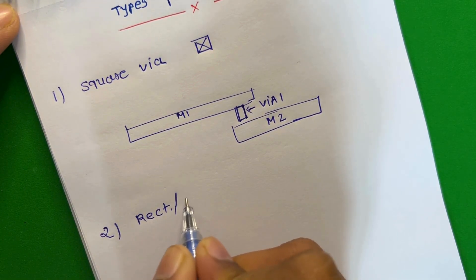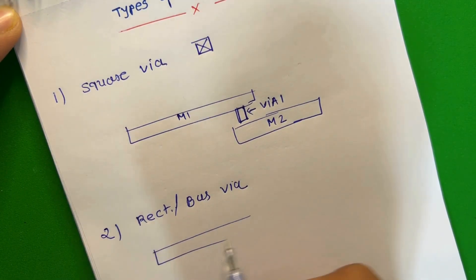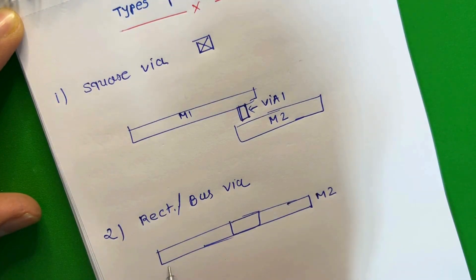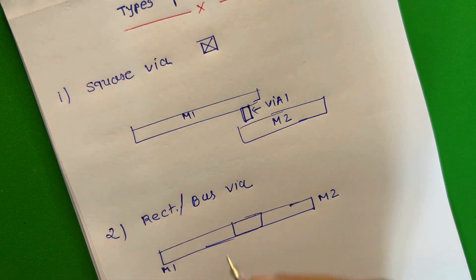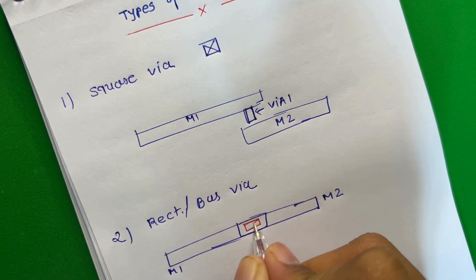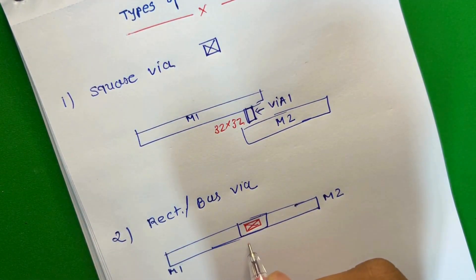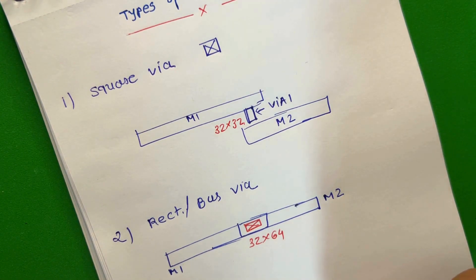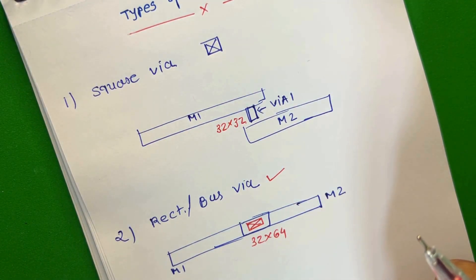The second type is rectangular wire, or bar wire. If we have enough space, it is always better to use a bar wire instead of the square wire. I am not drawing the cross section here, just drawing the top view like this. So this is bar wire. Let's assume the square wire size is 32 by 32 nanometer — in this case the bar wire size is 32 by 64 nanometer. In our design it is always better to use bar wire instead of square wire. This is called a bar wire.